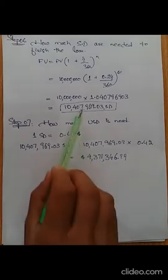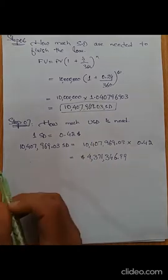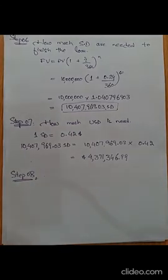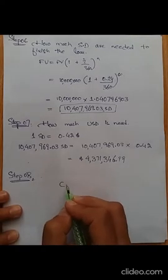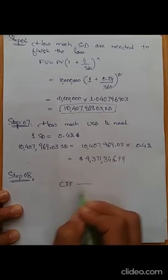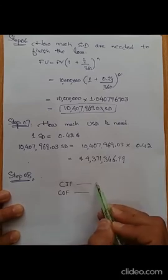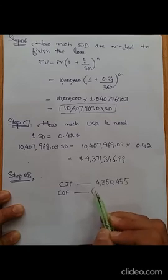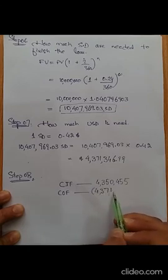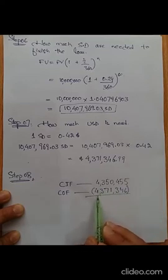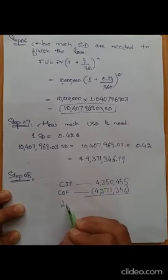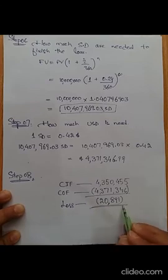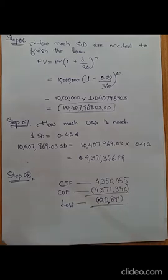In step eight, we calculate profit as cash inflow minus cash outflow. Cash inflow from the US bank deposit is approximately 4,350,455.51 USD. Cash outflow to repay the Singapore dollar loan is approximately 4,371,346.99 USD. Since the outflow is larger than the inflow, the result is a loss — a loss of approximately 20,891 USD.